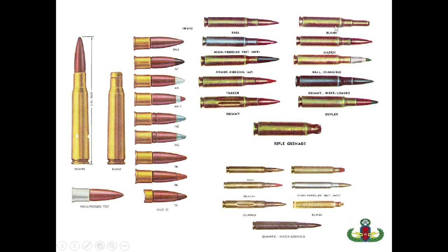Another example of ammunition includes: match, ball, frangible, dummy, inert load, and duplex. This is not a rifle grenade — a rifle grenade is larger and attached to the muzzle of the rifle. A rifle grenade has a tip that, when it hits a solid object, causes an explosion. This shown here is a plain blank ammunition.